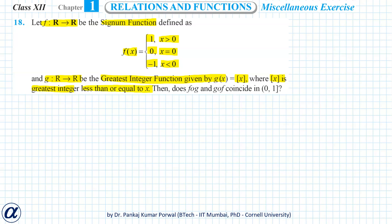The question asks: do fog and gof coincide on the interval (0, 1], where 0 is not included and 1 is included? This can also be written as 0 less than x less than or equal to 1.